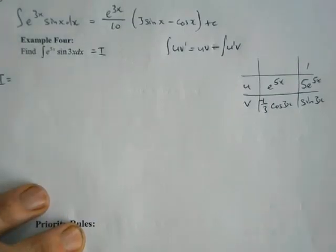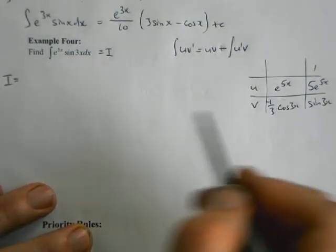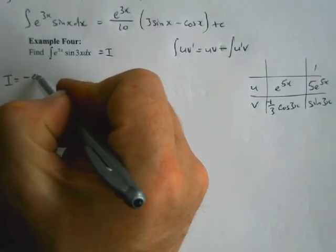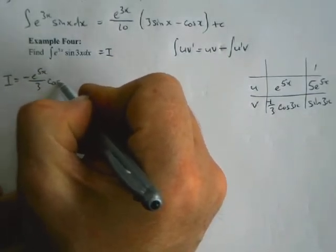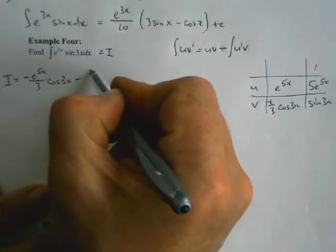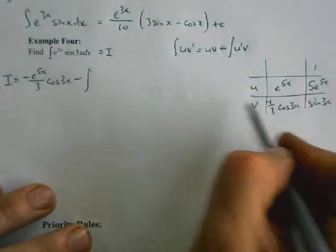So my integral I'm trying to find is equal to u times v, so it's this one times this one: minus e to the 5x over 3 cos 3x, minus the integral of u dash v.